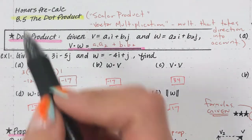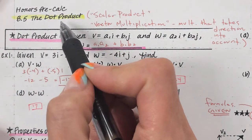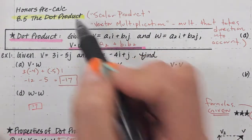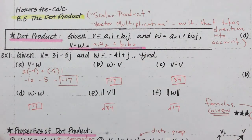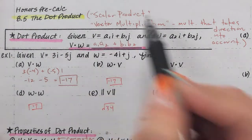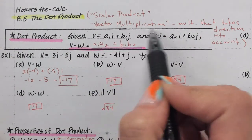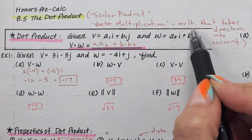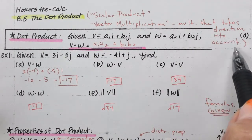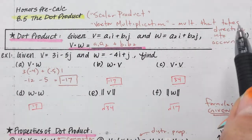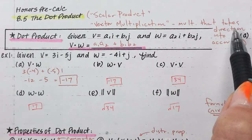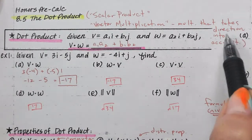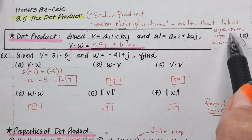Hey guys, so 8.5: dot product. Dot product is also known as a scalar product and vector multiplication. It's some sort of multiplication that takes direction into account, because usually it's just two numbers getting multiplied, but with vectors they have magnitude and direction.